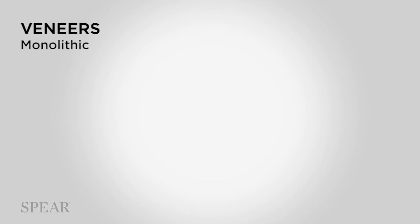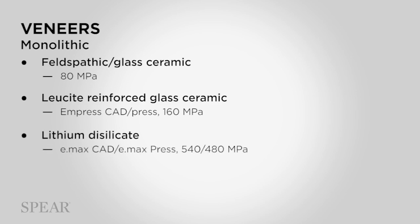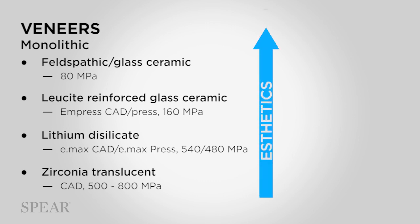Considering partial coverage first — veneers — looking at monolithic restorations using stain and glaze, I have an option of a felspathic or glass ceramic material: a very weak veneer at 80 megapascals in strength, but arguably the most aesthetic. Then we get into lucite-reinforced glass ceramic (Empress-type materials), lithium disilicate (Emax-type materials), and translucent zirconia materials, which must be manufactured by CAD-CAM. Aesthetics increase going up the list; strength increases going down the list.